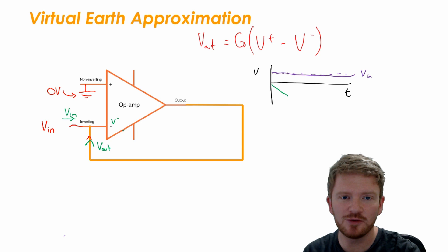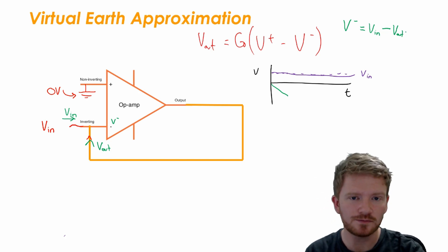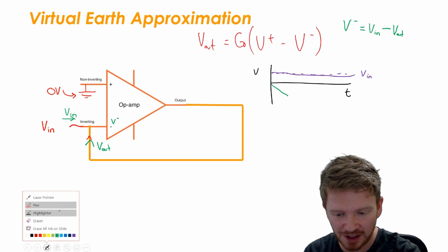What is the potential at the inverting input? Well over there I can say that the inverting input, the potential that the op-amp sees there, that is equal to V_in take away V_out. So what will happen to our value of V_inverting?